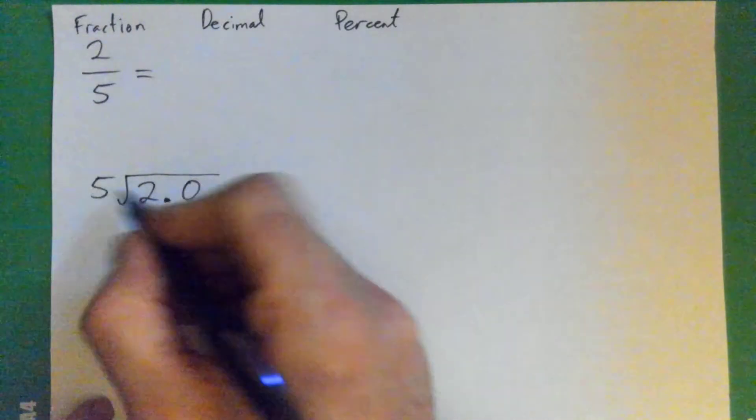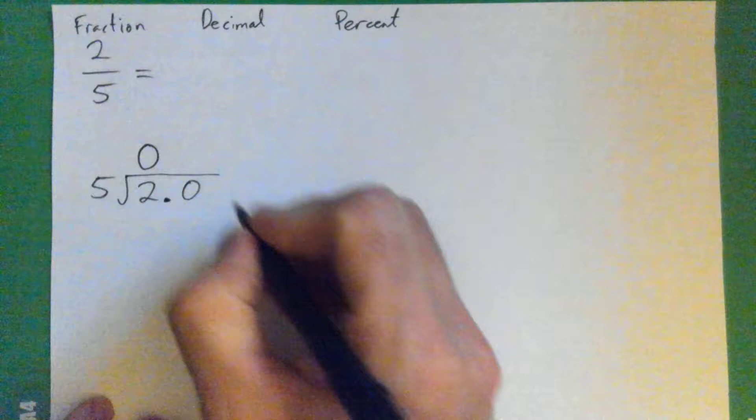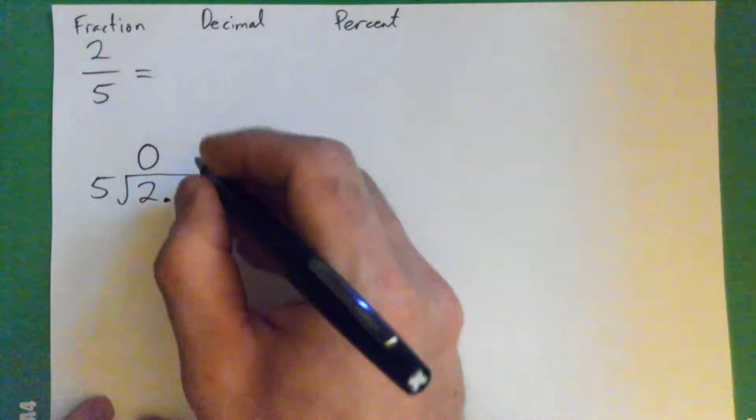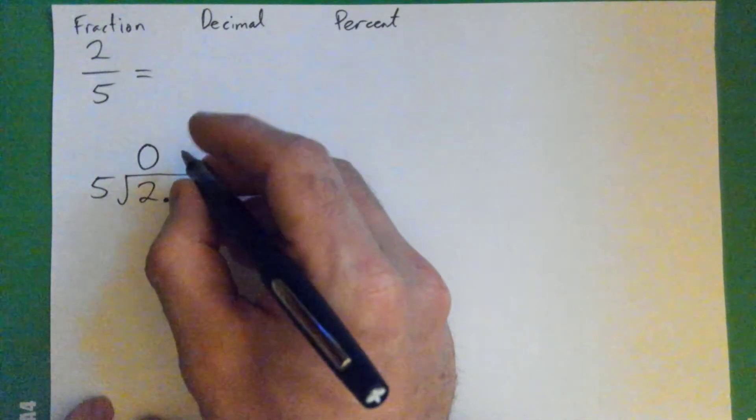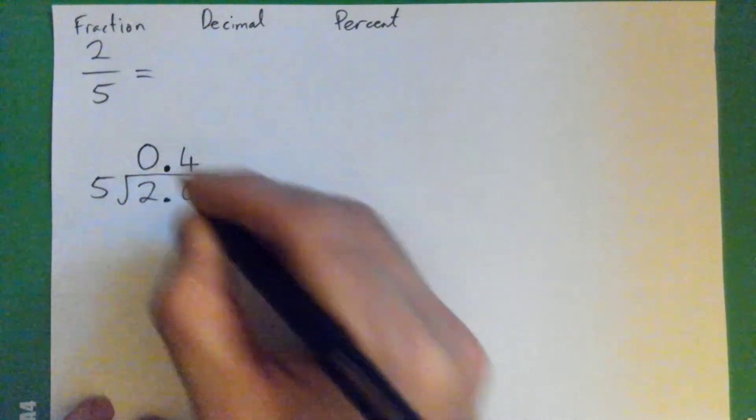So, that's the trick. Five into two goes zero times, right? And then five into twenty, four. And then the decimal point goes above here. So, you get zero point four.